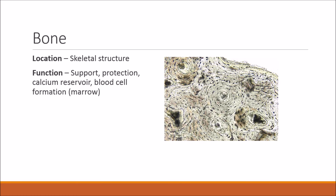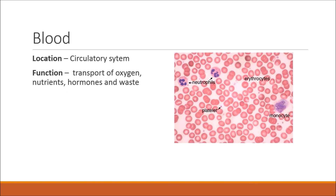Bone is found throughout the skeletal structure. Its functions are support, protection, acting as a calcium reservoir, and blood cell formation. Blood is found in the circulatory system and its function is the transport of oxygen, nutrients, hormones, and waste.